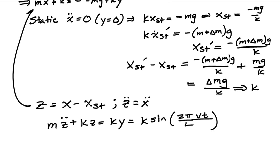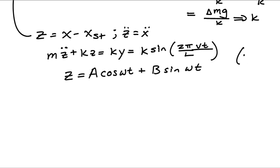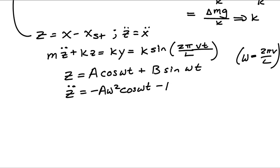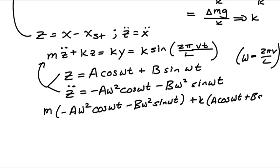To find the particular solution, I assume z equals A times cos(ωt) plus B times sin(ωt), where ω equals 2π v over L. Then z double-dot equals minus A ω² cos(ωt) minus B ω² sin(ωt). Substituting into the equation of motion: m(−Aω² cos(ωt) − Bω² sin(ωt)) + k(A cos(ωt) + B sin(ωt)) equals k y_naught times sin(ωt).